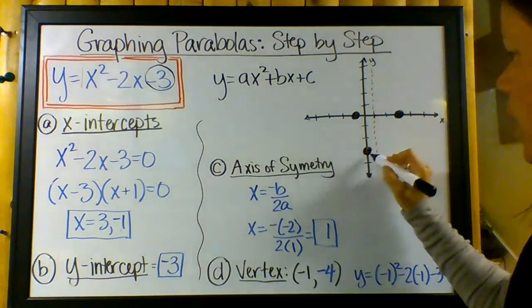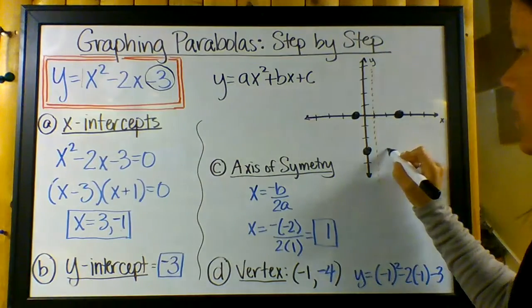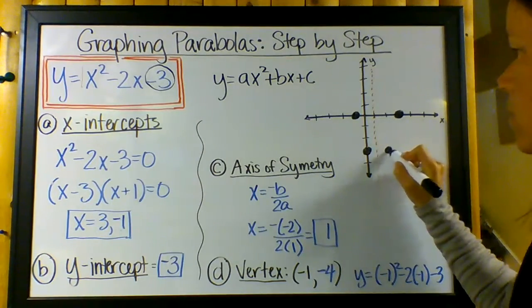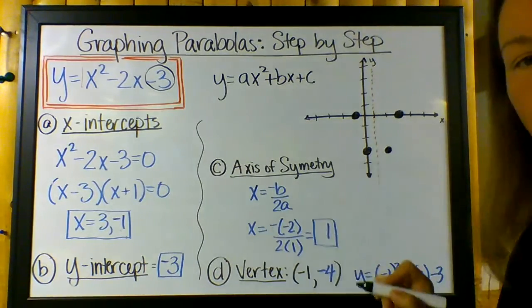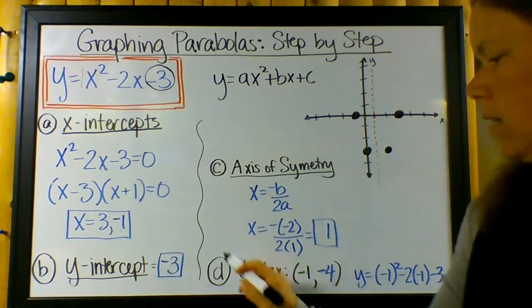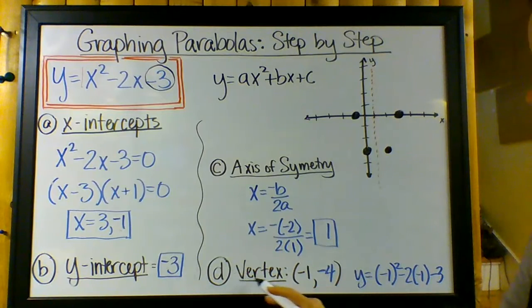I'm going to go ahead and give my y-intercept its partner point right there. Okay? So there's a partner point on the x-axis. The y-intercept has a partner point. And then, let's see. I've got this vertex.